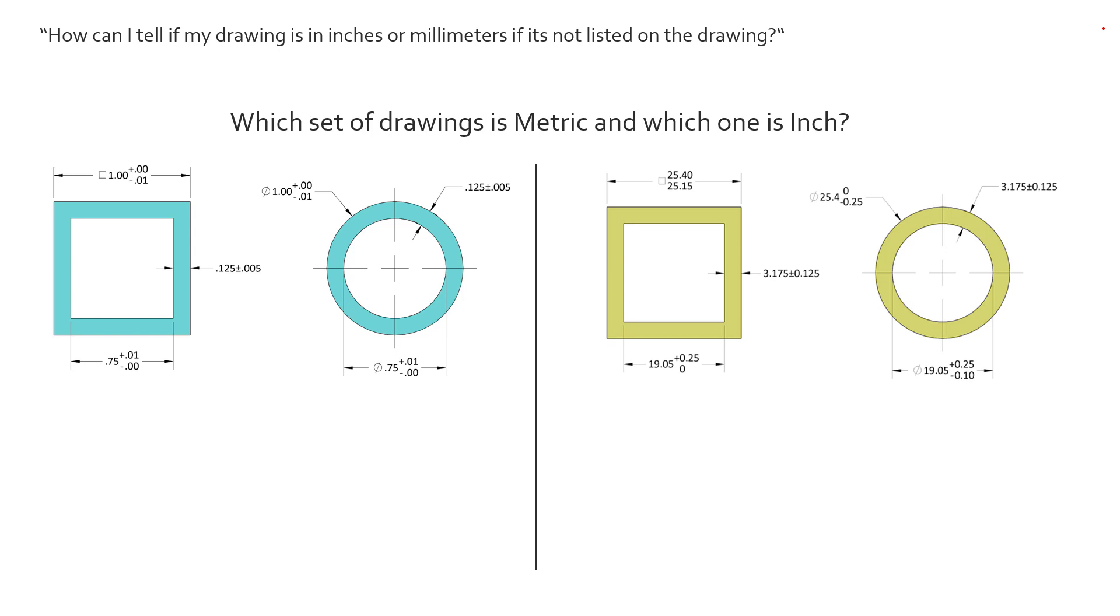I can tell you right out of the gate that the one on the left is inch and the one on the right is metric. And how I know this is the trailing and leading zeros for both dimensions.